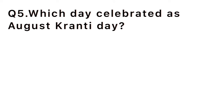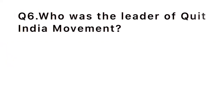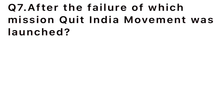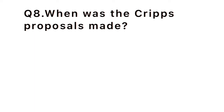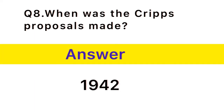Question number 5: Which day is celebrated as August Kranti Day? Answer: 8th August. Question number 6: Who was the leader of Quit India Movement? Answer: Mahatma Gandhi. Question number 7: After the failure of which mission was the Quit India Movement launched? Answer: Cripps Mission. Question number 8: When were the Cripps proposals made? Answer: In the year 1942.